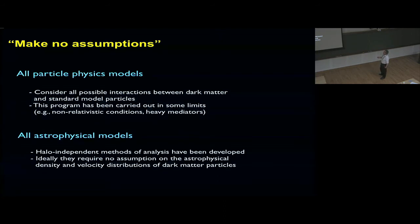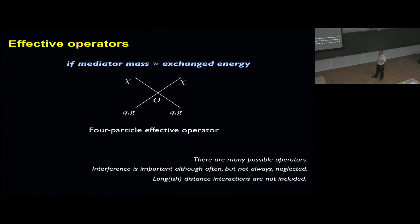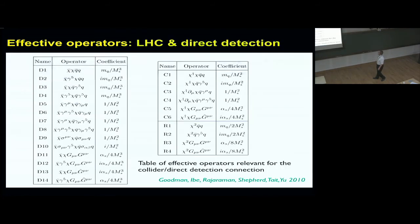Consider all possible interactions between dark matter and standard model particles. This program has been carried out in some limits. For astrophysics there are halo-independent methods of analysis that ideally require no assumption on the astrophysical properties of dark matter. The techniques I used here are effective operators for the theory part. This is analogous to Fermi beta decay theory. Effective operators are applicable if the mediator mass is much larger than the exchanged energy. There are many possibilities, and interference is important and not always neglected.